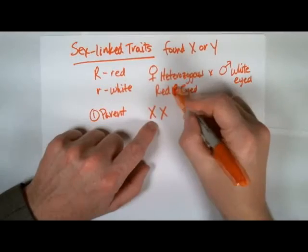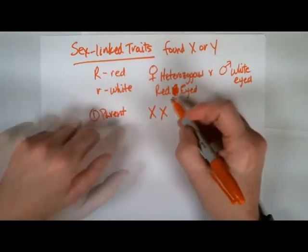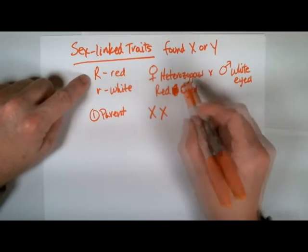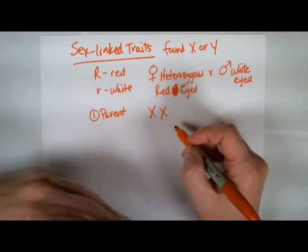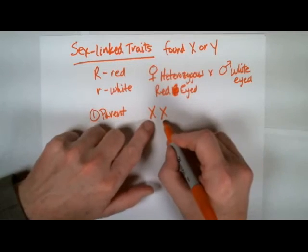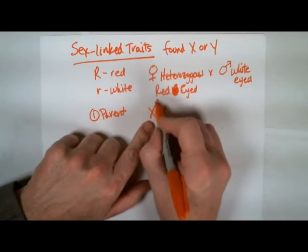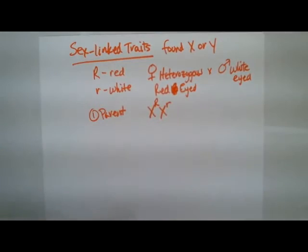And because it's red-eyed and red is dominant, we should be big R and heterozygous, meaning it's going to be big R and little r. Now because it's sex-linked, or X-linked, it's only found on this X chromosome, it's going to end up being a superscript.